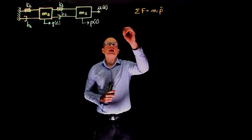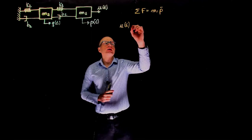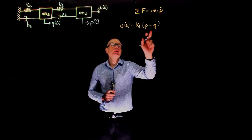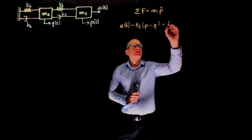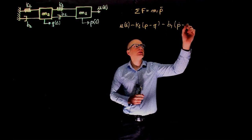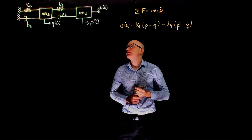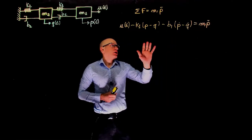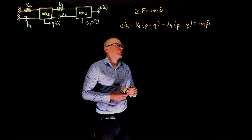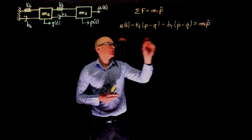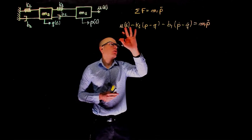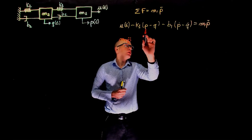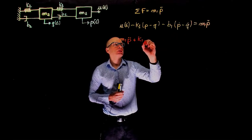What are these forces? We have u(t), negative k1 times (p minus q) — displacement of mass 1 minus displacement of mass 2 — minus b1 times (p_dot minus q_dot). These are all the forces, and this is equal to m1 times p double dot. We can now rearrange this equation, keeping p on one side and q on the other. We have m1 times p double dot, and moving all p's to that side gives us k1 times p, which becomes plus k1 times p.